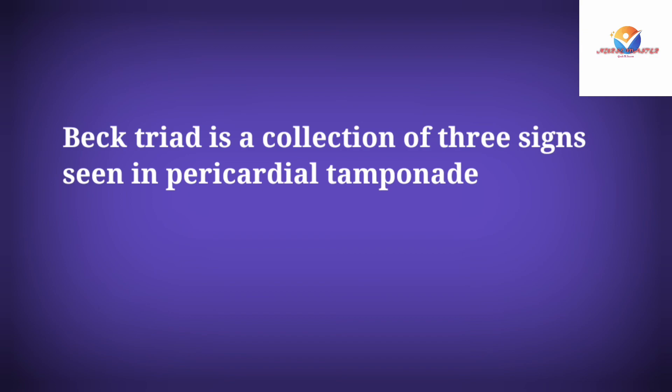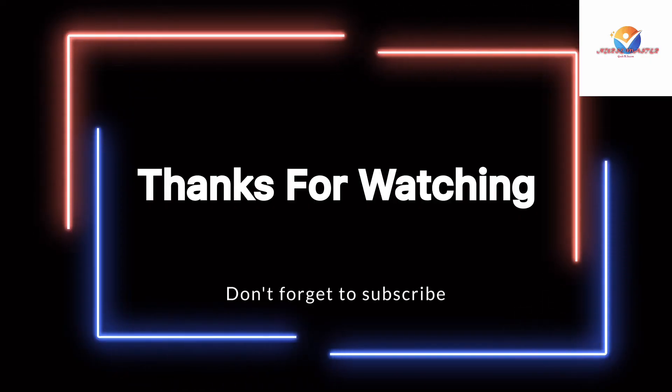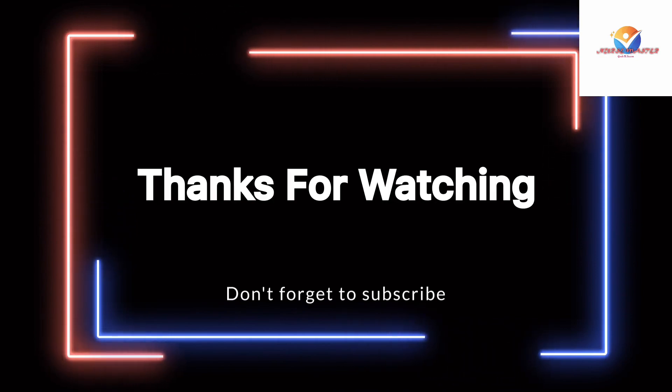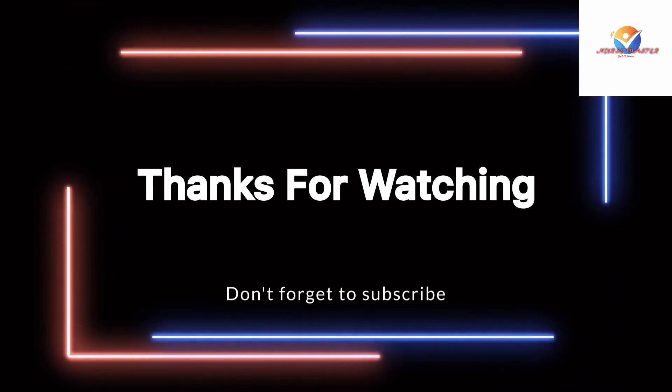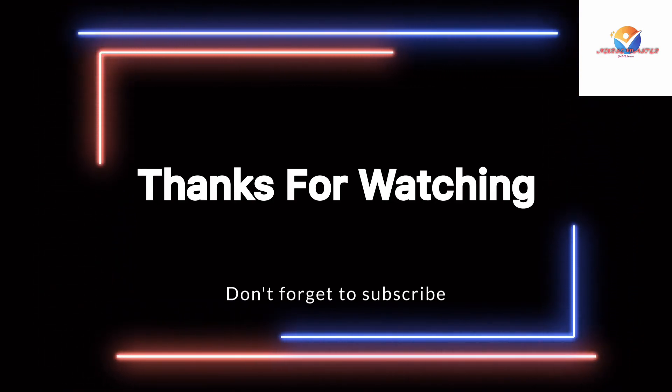Beck's Triad is a collection of three clinical signs seen in cardiac tamponade, which is due to excessive accumulation of fluid within the pericardial sac. The three signs are: decreased blood pressure, distended neck veins, and muffled heart sounds.